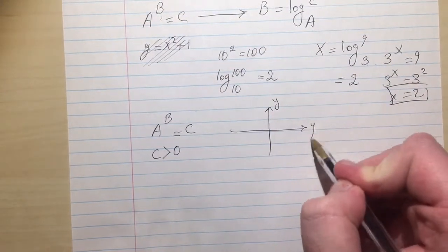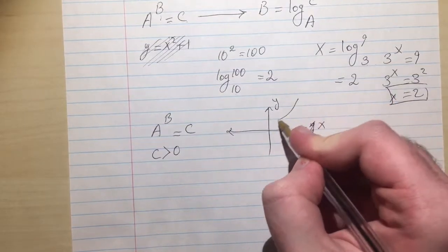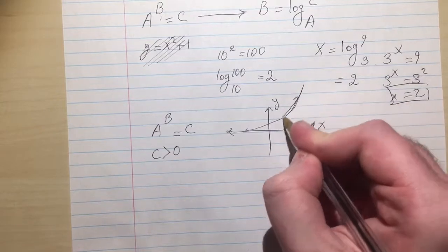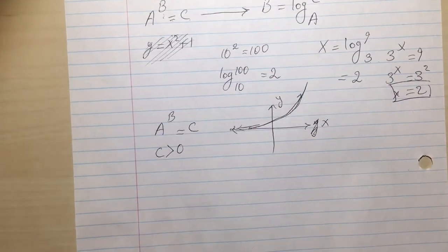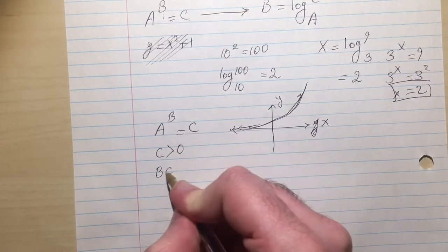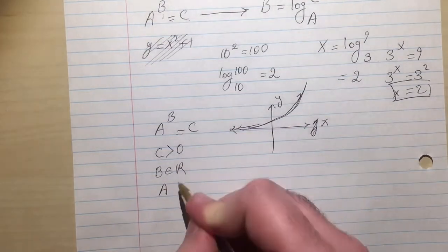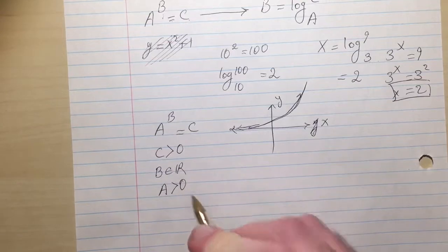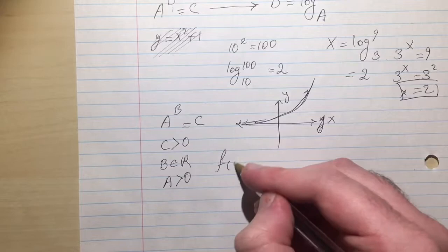C cannot be below 0. B can be anything. However, A can be only greater than 0. It cannot be 0 or a negative thing. So this one for example is not an exponential function.